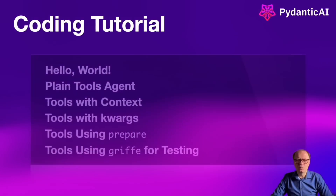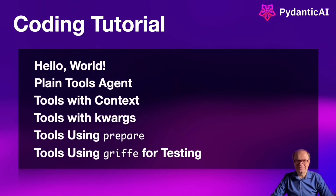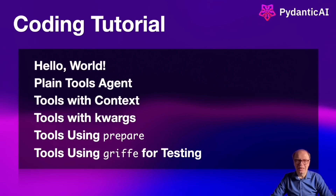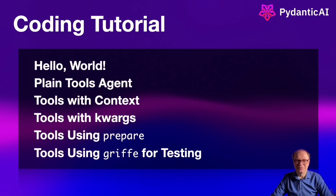Today we'll work on six examples, starting with a simple hello world, then moving to a basic plain tools agent. Next, we're going to call tools with context. In the third example, we'll use kwargs to pass the tools to the agent. The prepare parameter is unique to PyDantic AI and allows for selective calling of tools — that's what we're going to do in the fifth example. Finally, we'll use docstrings to describe tools for testing purposes, and that's going to use Griffe.